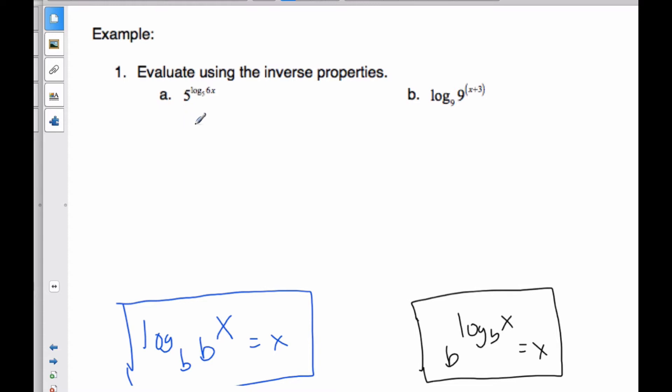And if I consider this, if I look at this scenario here, I have an exponential, the base is 5 raised to a log of a base 5 of 6x. Well, that means these two pieces here cancel out, and I'm left with just 6x is what this inverse property says.